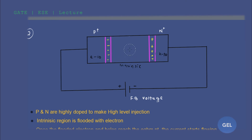The key point is: even if the minority charge carrier concentration on the p-side is larger than that in the intrinsic side in the normal case, there will be a depletion region formed at the junction. Due to this, there will definitely be a minority carrier injection from the p-side to the intrinsic side. The concentration of carriers injected into the intrinsic side is more than the normal carriers already present there.